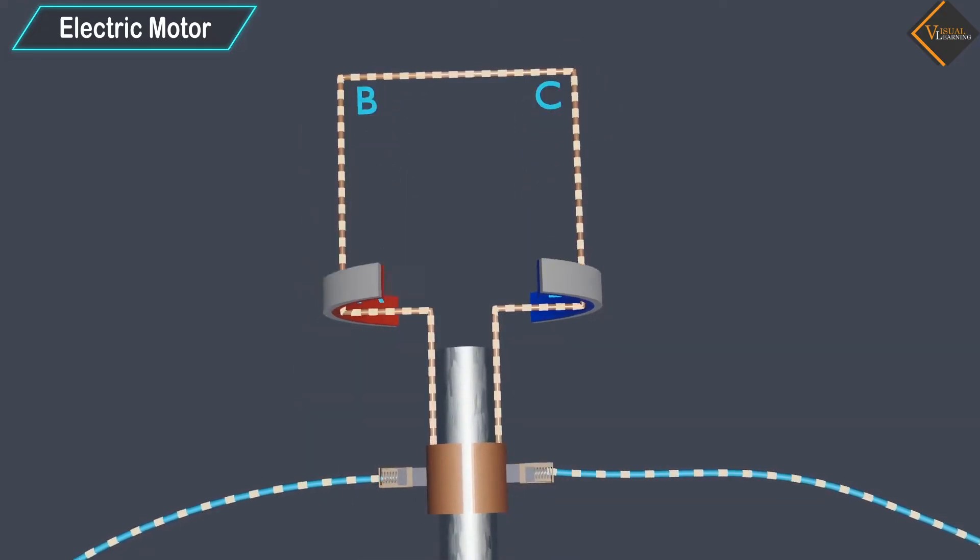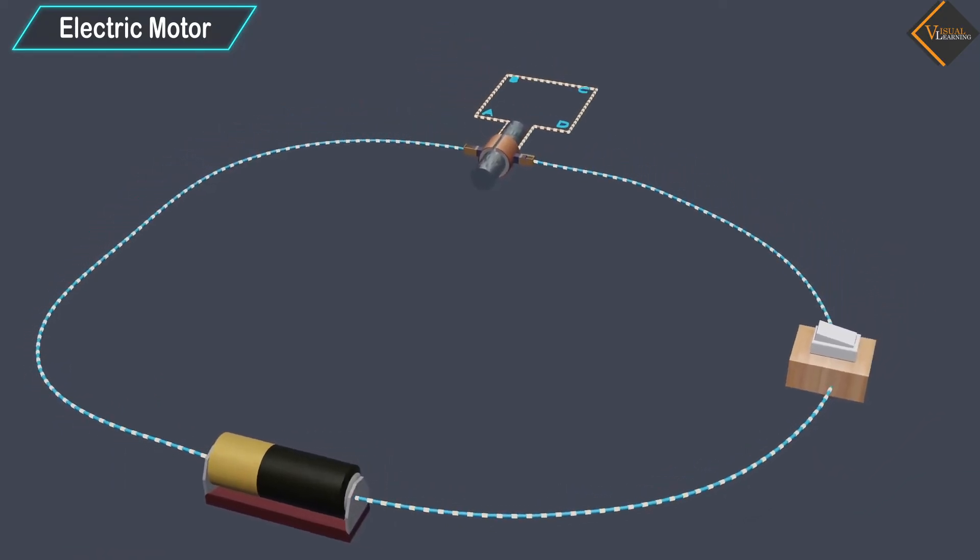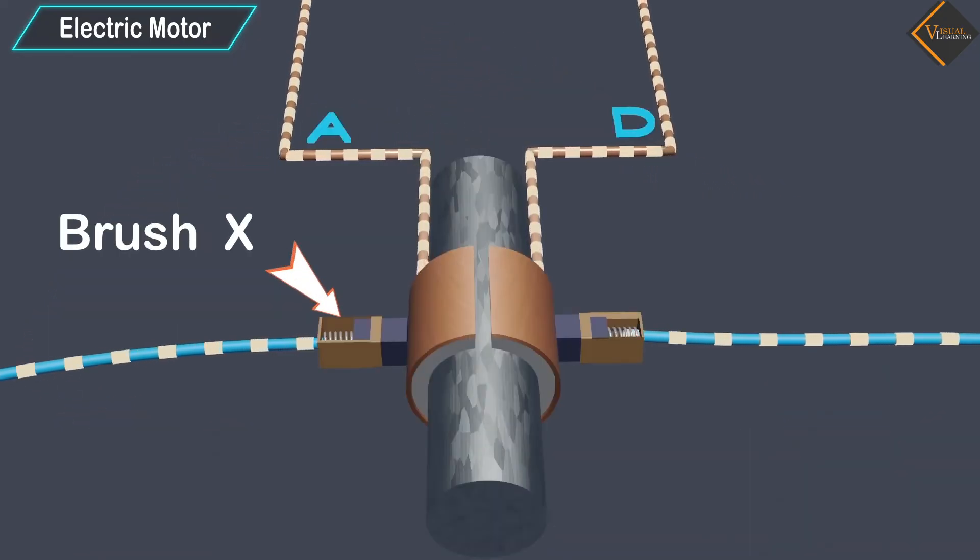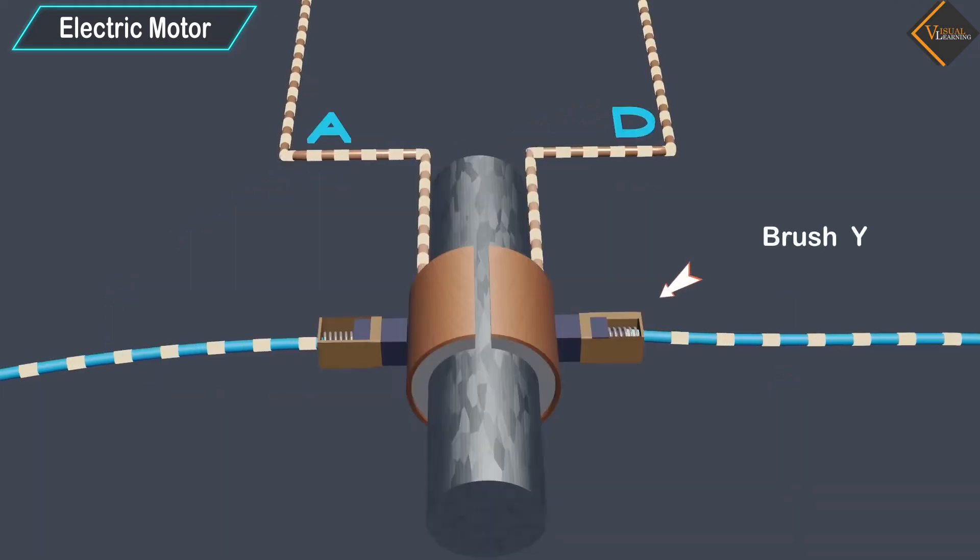Current in the coil A, B, C, D enters from the source battery through conducting brush X and flows back to the battery through brush Y.